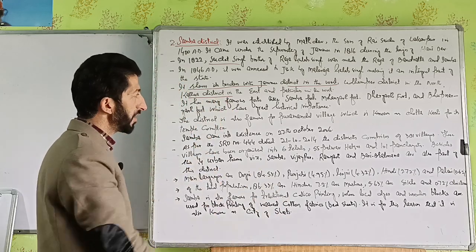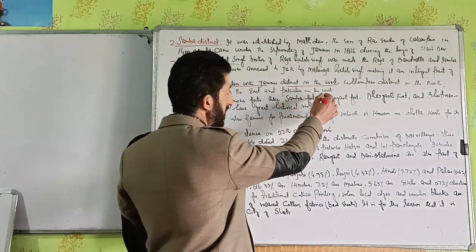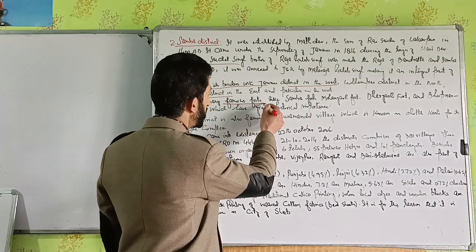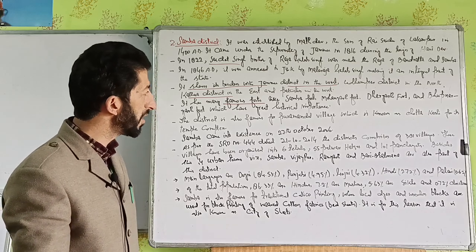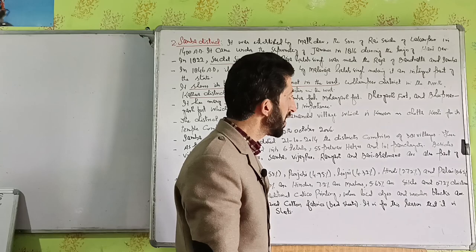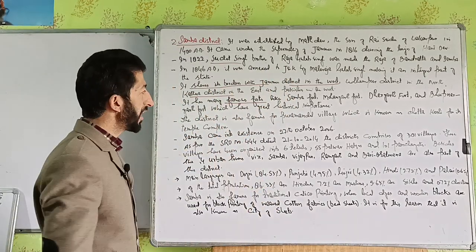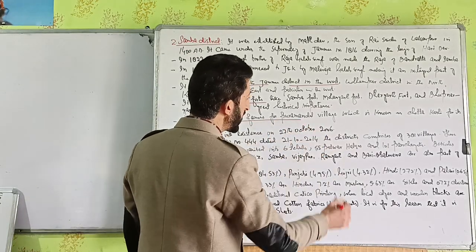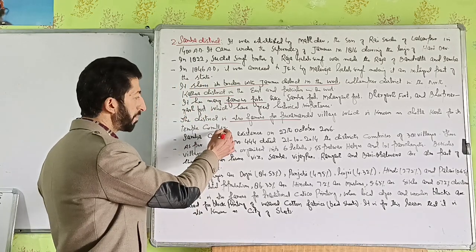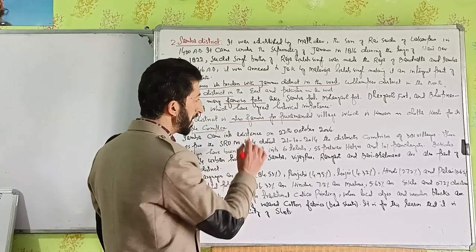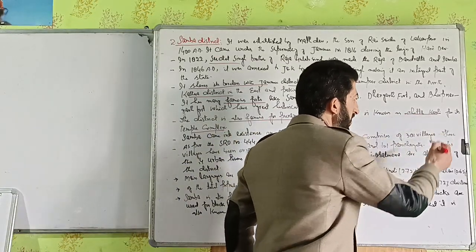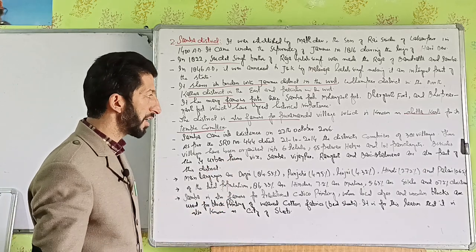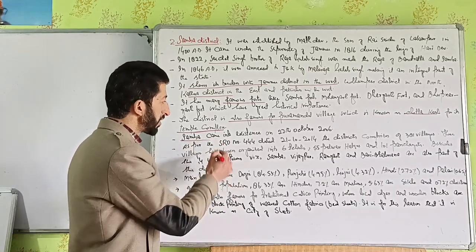Samba district is famous for fortresses including Samba fortress, Mohangarh fortress, Dhirgarh fortress, and Banimagarh fortress, which have great historical importance. The district is also famous for Puramandal village, which is a hub of temples and a temple complex.